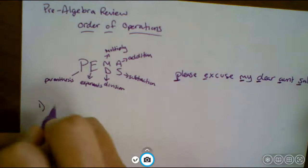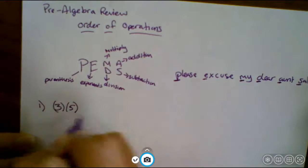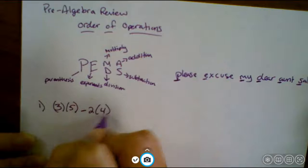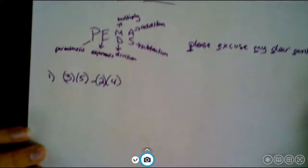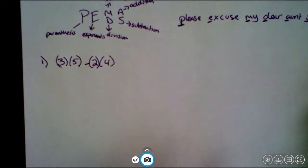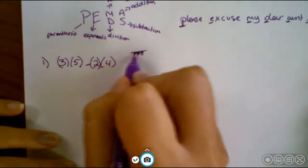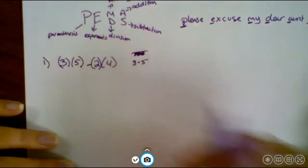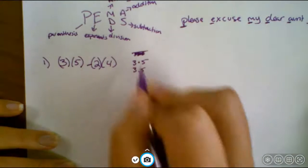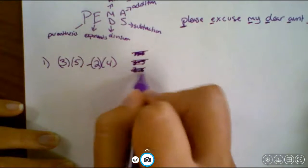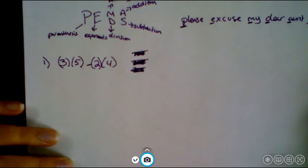We've got the first one. We're going to have three times five minus two times four. Now you're going to see me writing parentheses for multiplication, and I want you guys to get used to that, because we're going to have variables a lot more in algebra one, and an X can very easily look like a multiplication sign. And a dot for three times five a lot of times starts looking like a decimal, because it's not very far off. So I'm going to try to get you guys in the habit of using the parentheses for multiplication.